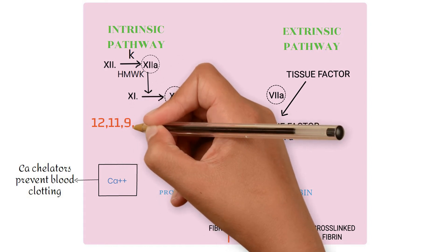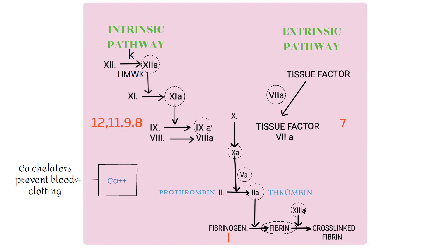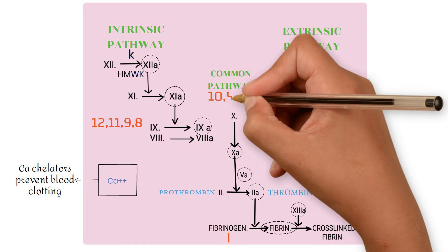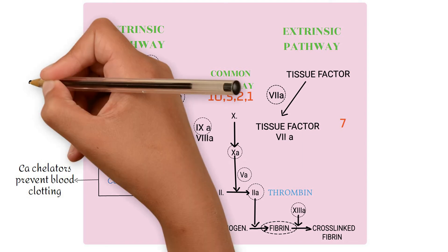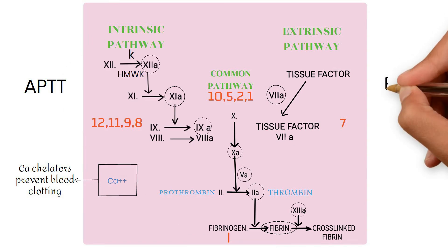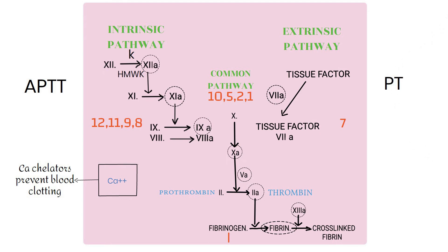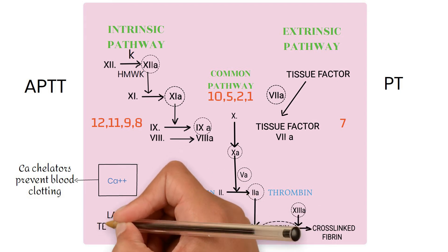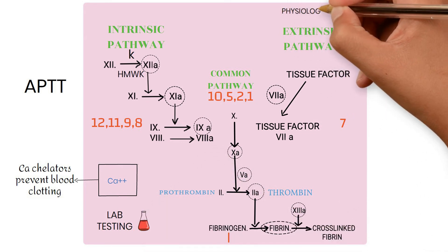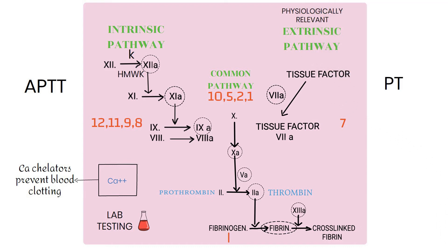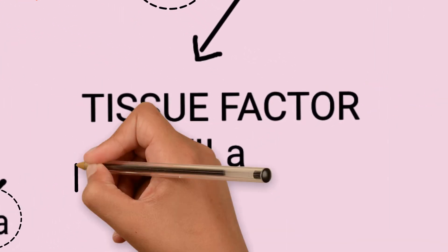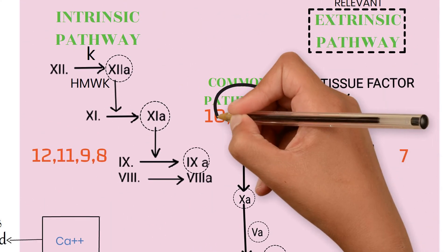Under the intrinsic pathway, the factors involved are 12, 11, 9, and 8. Factor 7 is in the extrinsic pathway. Common to both pathways are factors 10, 5, 2, and 1. Deficiency of factors in the intrinsic pathway prolongs the aPTT (activated partial thromboplastin time), while deficiency of factors in the extrinsic pathway prolongs the prothrombin time. This classification is mainly used for lab testing. Physiologically, the extrinsic pathway is what is relevant inside the body, where the tissue factor–factor 7 complex directly activates factor 9.